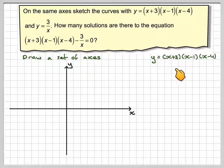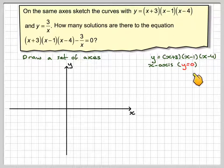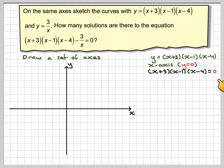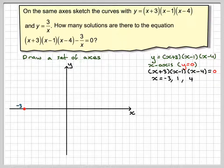For the cubic x plus 3, x minus 1, x minus 4, on the x-axis y equals 0, which means x plus 3, x minus 1, x minus 4 equals 0. This gives x equals minus 3, x equals 1, and x equals 4. Plot those points on, roughly in the right place.